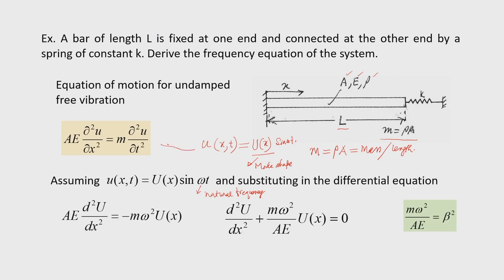Substituting u(x,t) = U(x) sin(ωt) in the equation of motion, when we take the double derivative with respect to time, −ω² sin(ωt) appears. The sin(ωt) term cancels from both sides, so we can write: d²U/dx² + (mω²/AE) U(x) = 0. Let this term be β², giving us the simplified differential equation to solve for the mode shape U(x).